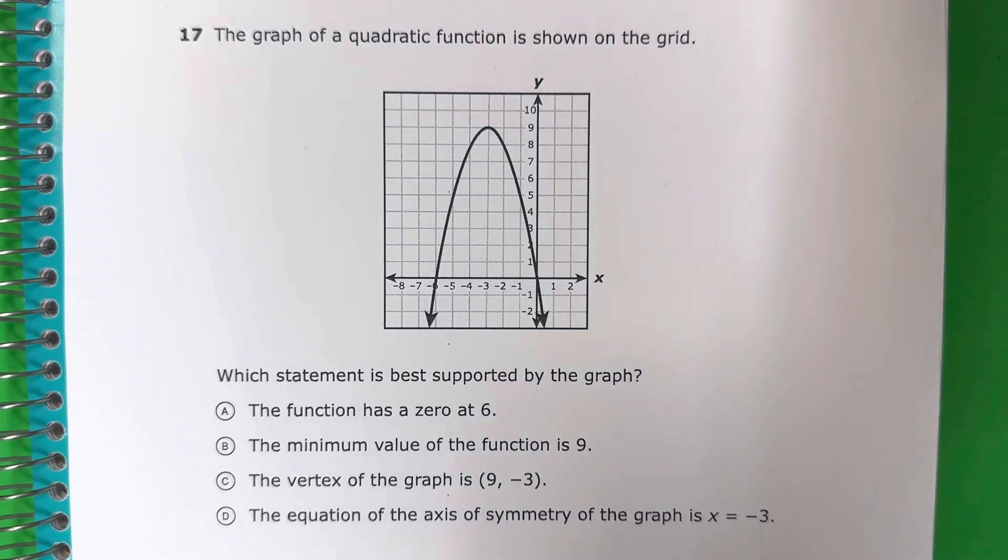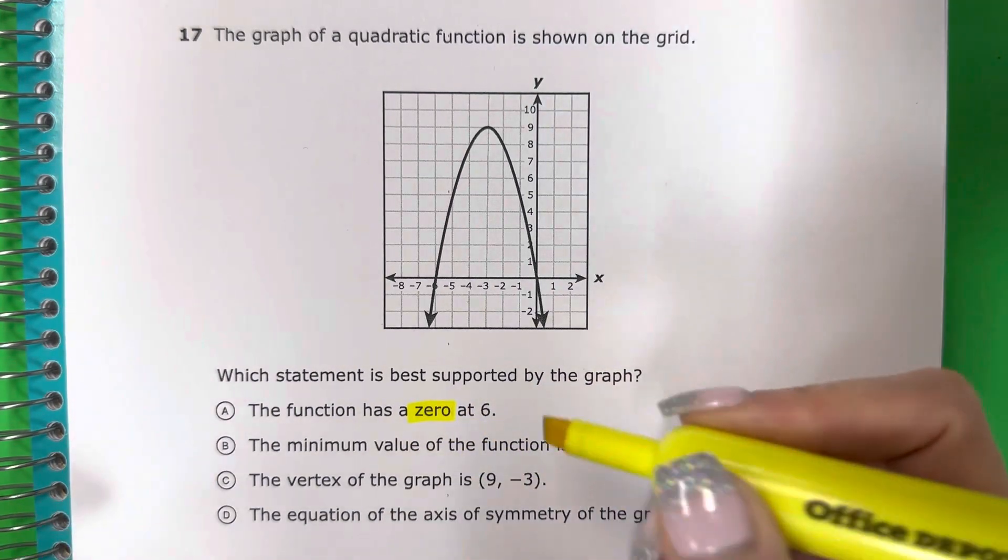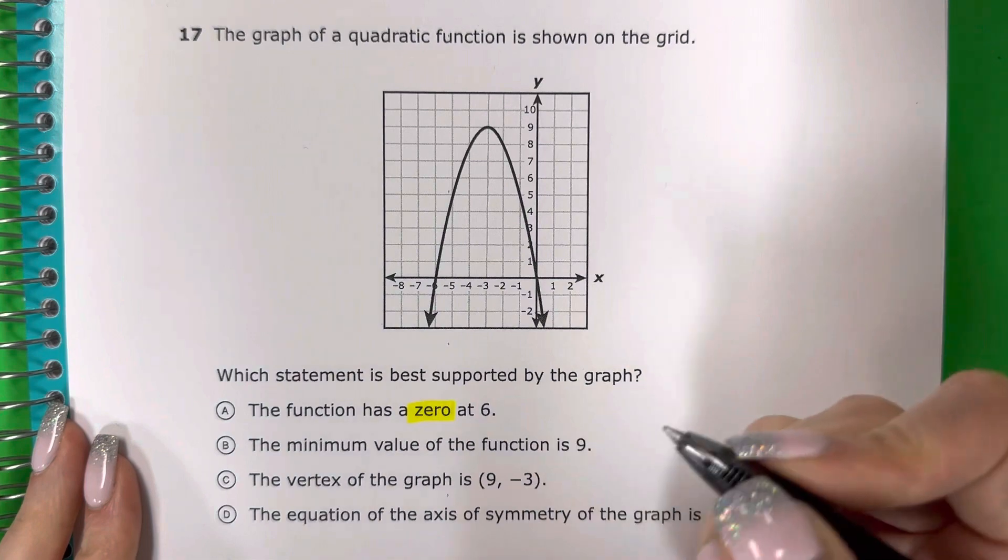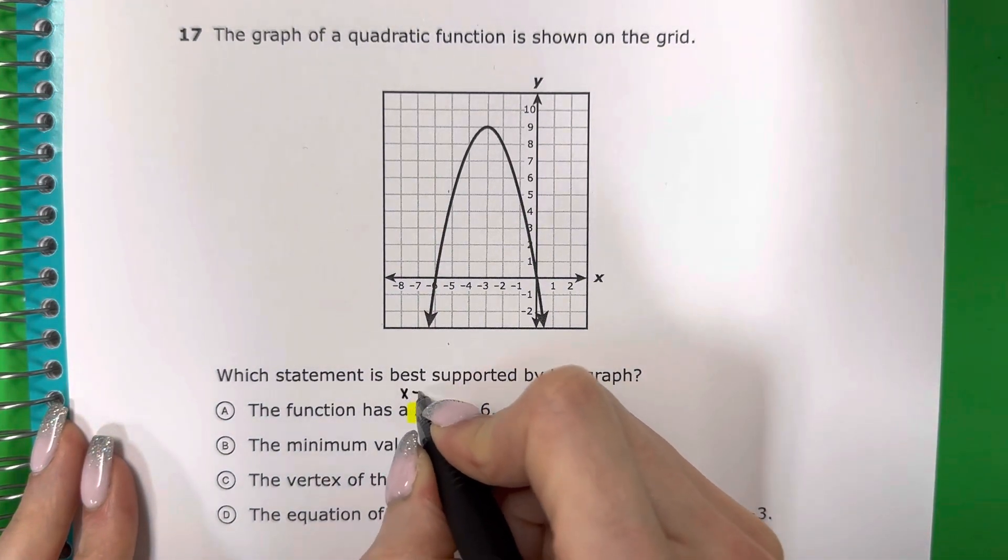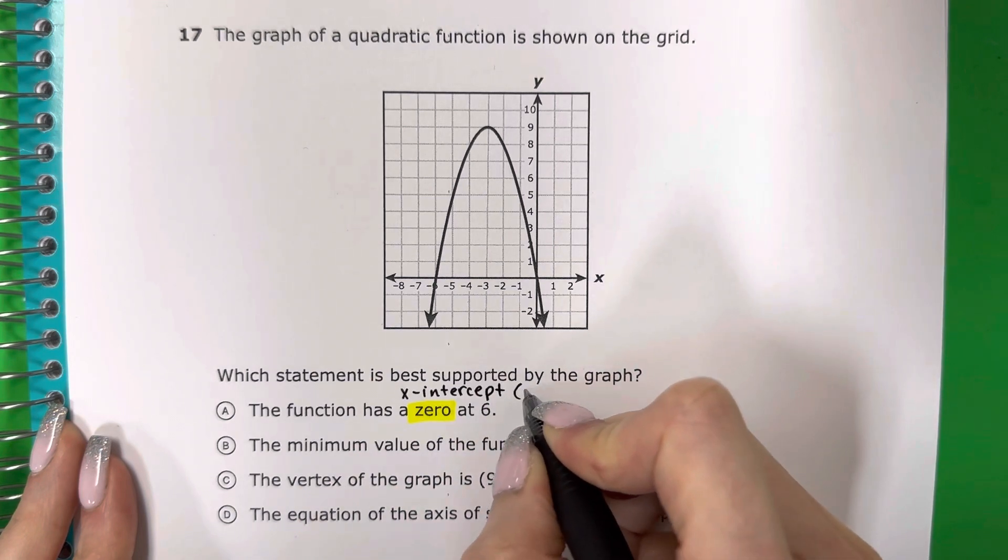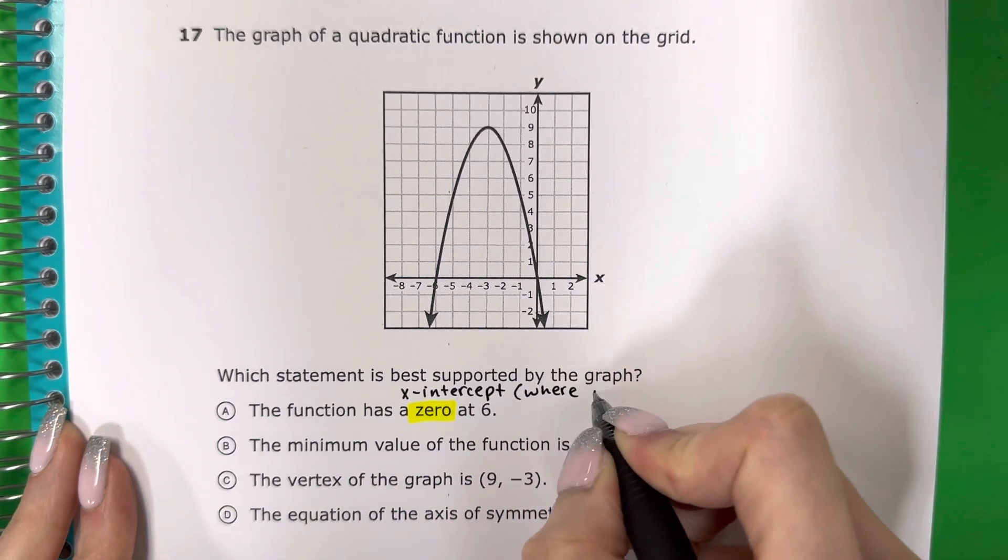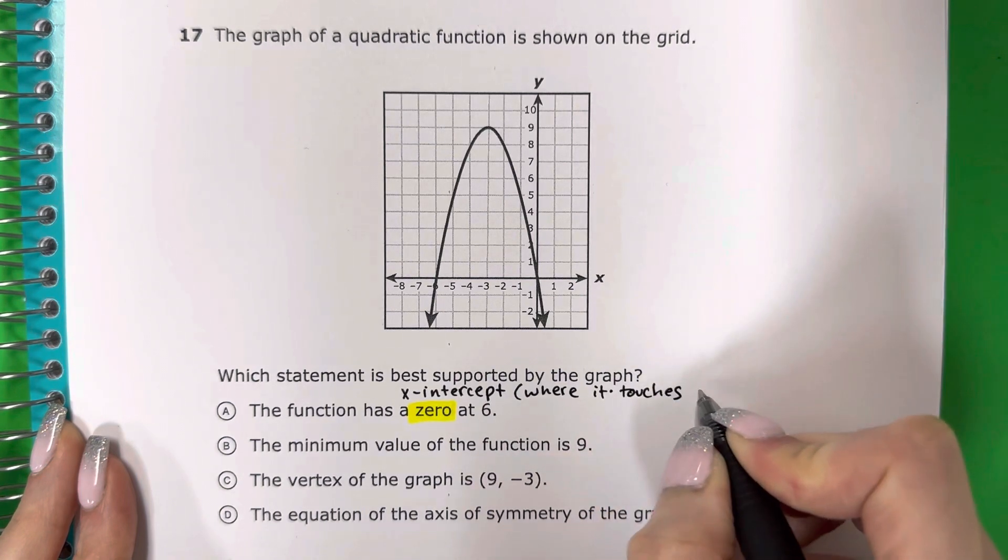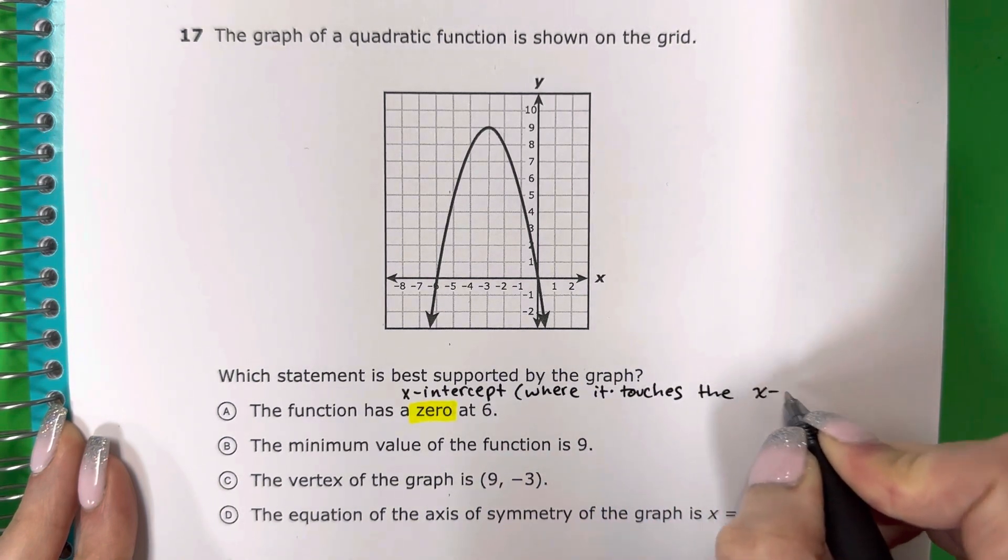So the first one says the function has a zero at 6. So what is a zero? Zero is another word for x-intercept, and that basically means where it touches or intersects the x-axis.